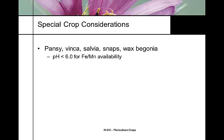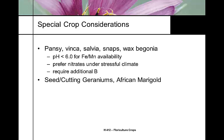Crops like pansies, vinca, salvia, and snapdragons need to be grown at a pH less than 6; otherwise, iron and manganese become less available and deficient. Sometimes with these crops you'll have to add trace elements with a chelate to protect against higher pH. These crops actually require boron. For seeds and cutting geraniums, you run into different problems. Where do you get this information? You read about your crop, know your nutrient levels, and a lot comes from experience.